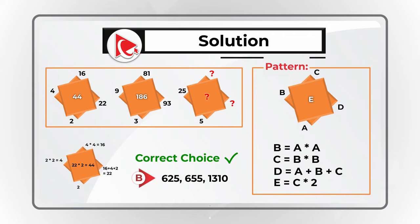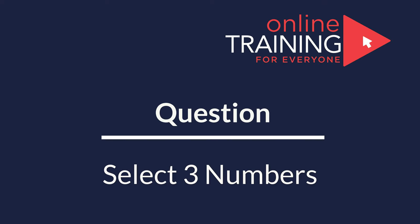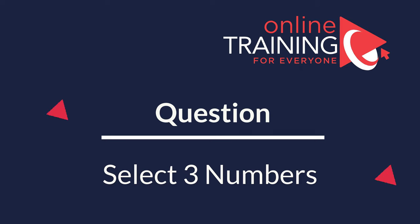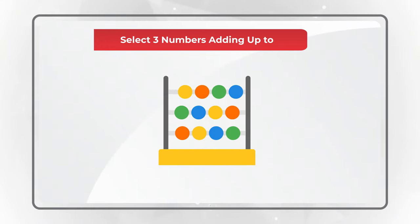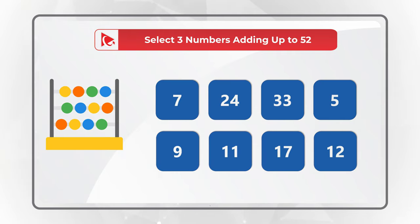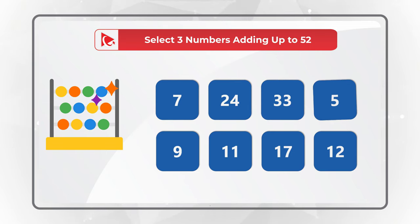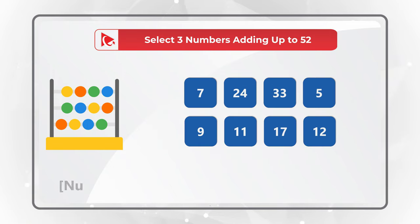Hopefully you've nailed this question and now know how to answer similar problems. Here is an unusual question we're starting to see on the test more often. You need to select three numbers which add up to 52 from eight choices: 7, 24, 33, 5, 9, 11, 17, and 12.